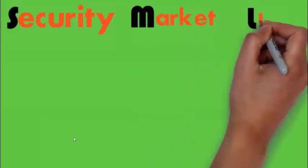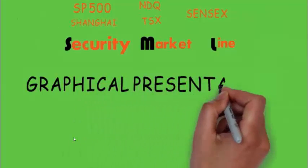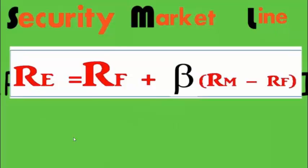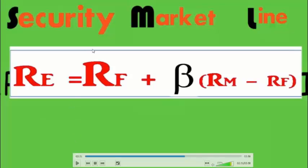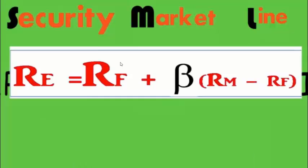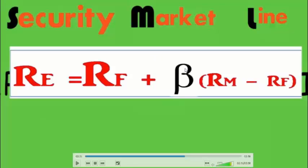The most important concept of CAPM is the SML — Security Market Line — which gives a graphical presentation to calculate an asset's price or required return. The SML equation is: RE (required rate of return) equals RF (risk-free rate of return, such as government securities or treasury bonds, which carry no risk) plus beta multiplied by RM minus RF.